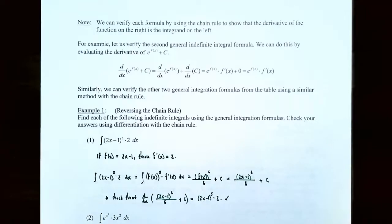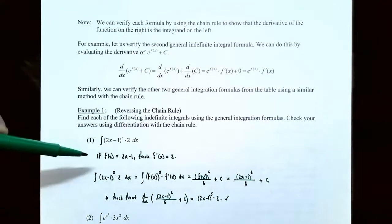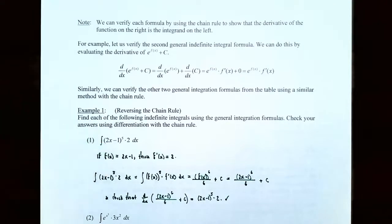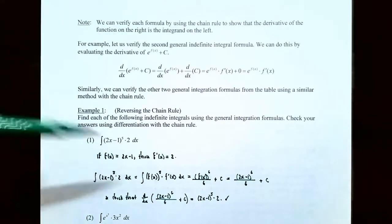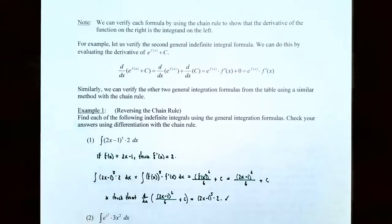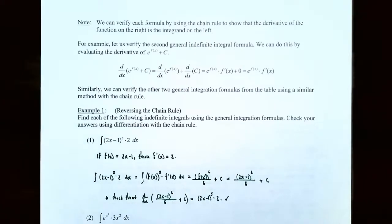Of the three formulas, this looks like the first formula, where you have a function f of x being raised to an n power. So let f of x equal the inside function, 2x minus 1. We can use the general integration formulas if f prime of x appears in the integrand. If f of x is 2x minus 1, then f prime of x is 2, and 2 appears in the integrand. So we can use integration formula number one, which is the power rule.